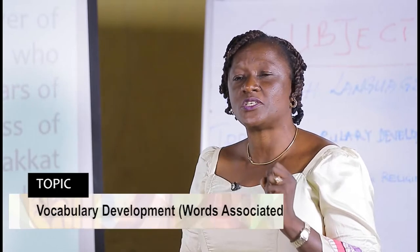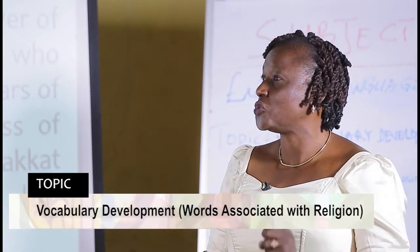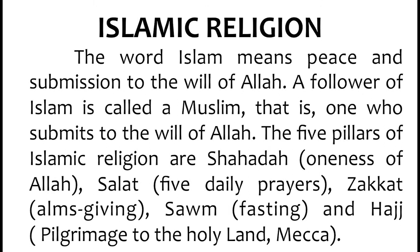Now we move on to Islamic religion. The word Islam means peace and submission to the will of Allah. A follower of Islam is called a Muslim — one who submits to the will of Allah. The five pillars of Islam are: Shahada, which means oneness of Allah; Salat, which means five daily prayers; Zakat, which means alms-giving; Sawm, which means fasting; and Hajj, which means pilgrimage to the holy land of Mecca.